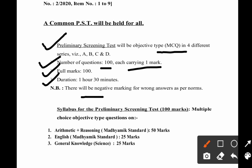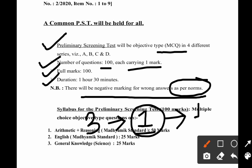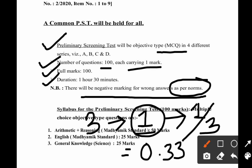There will be negative marking for wrong answers as per norms. For each wrong question, marks will be deducted from positive marks — it will be 1/3, that is 0.33 marks will be deducted for each wrong answer.